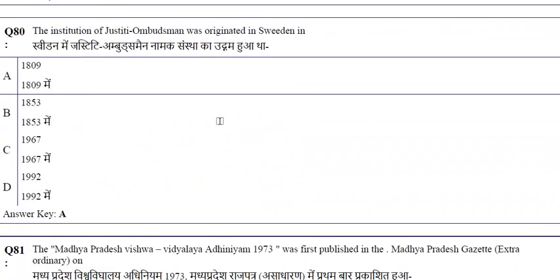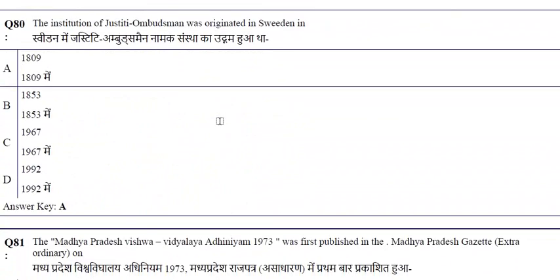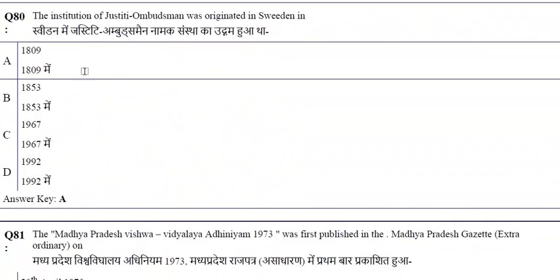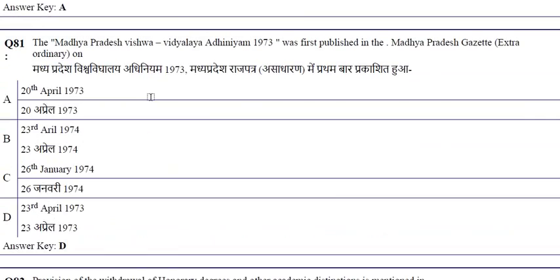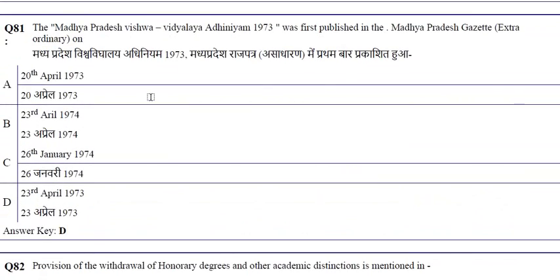The idea of cooperative federalism in India is well reflected in union-state legislative relations. The institution of Justitieombudsmannen (ombudsman) originated in Sweden in 1809. The MP Vishwavidyalaya Adhiniyam 1973 was first published in the MP Gazette Extraordinary on 23rd April 1973.